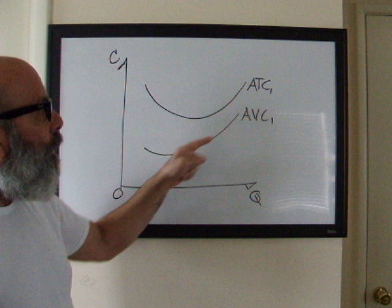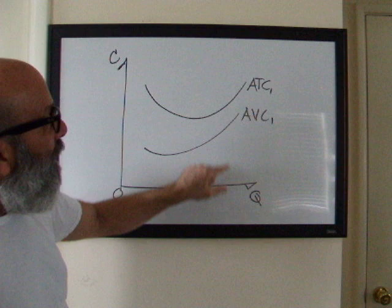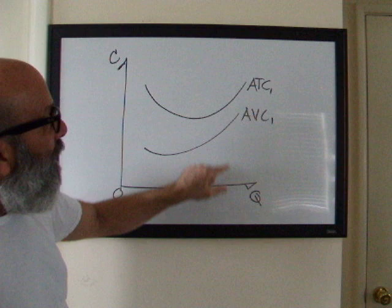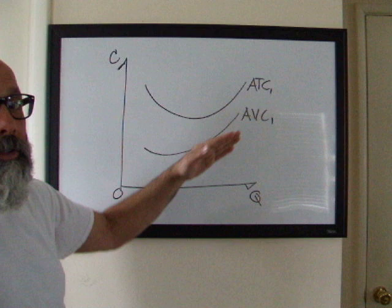And remember, the space between the average variable cost and the average total cost is higher when the quantity is low. That's because your average fixed costs are high when the quantity is low. And it narrows when the quantity is high because your average fixed costs really drop as the quantity goes up. And that further reinforces that the space is the space of the average fixed cost.